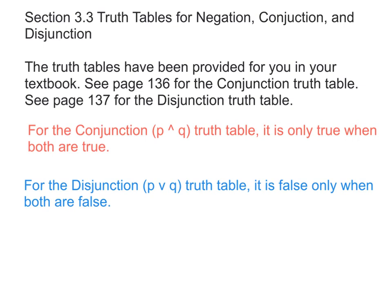Section 3.3 is Truth Tables for Negation, Conjunction, and Disjunction. The truth tables have been provided for you on pages 136 and 137. For the Conjunction, you need to remember that it is only true when both are true. For the Disjunction, which is the OR statement, it is only false when both are false.